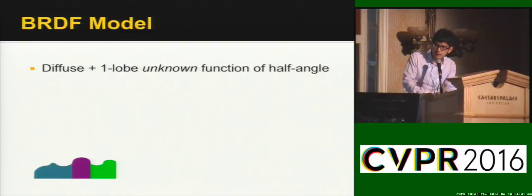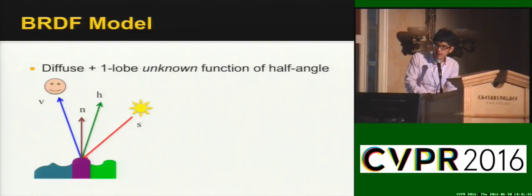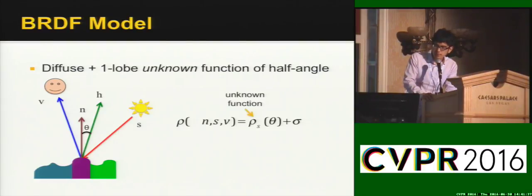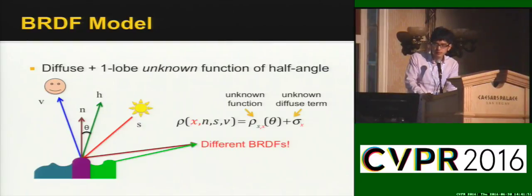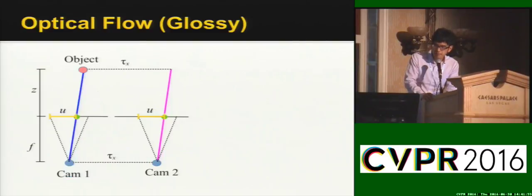However, many real-world objects are actually not diffuse. So let's take a look at our BRDF model. Our model contains a diffuse term plus a one-lobe function of the half angle. Suppose there's a surface, and n is the normal at some point on the surface. S is the light source direction, and v is the viewing direction. h is the halfway vector between s and v, and theta is the angle between n and h. So mathematically, our BRDF model looks like this, where rho_s is a completely unknown function of the half angle theta, and sigma is the unknown diffuse term. A very important feature of our BRDF model is that it can be spatially varying, which means for different points on a surface, their BRDFs can actually be different.